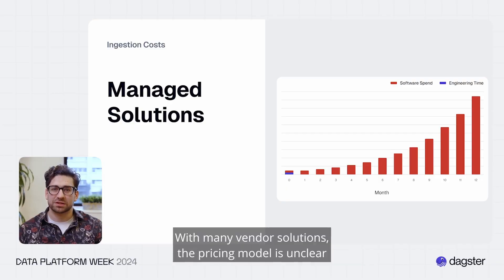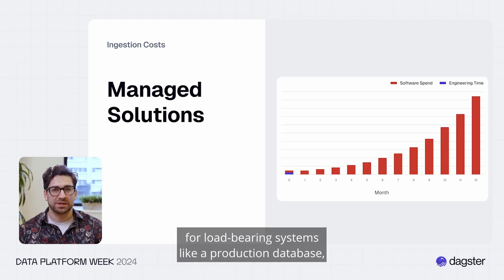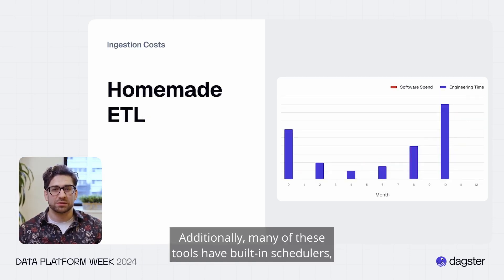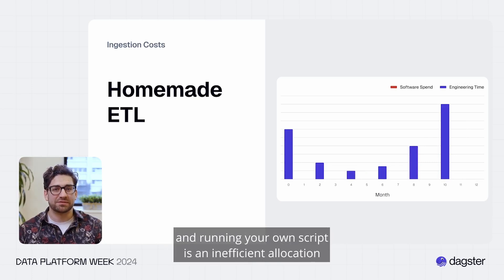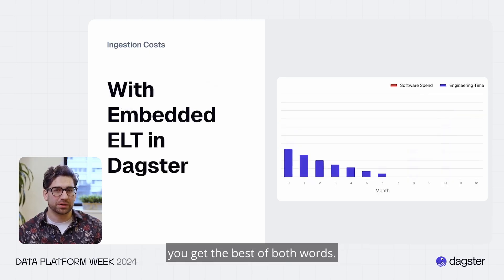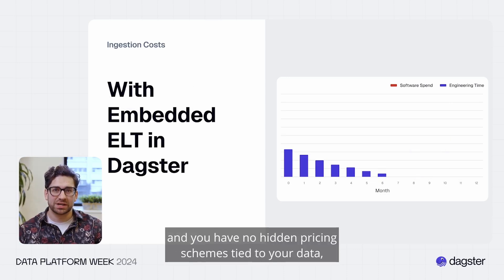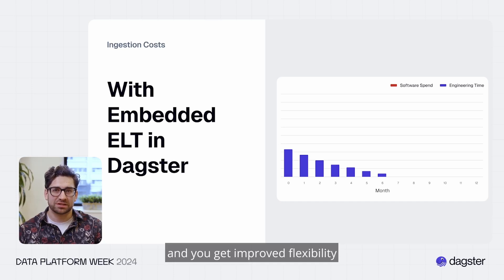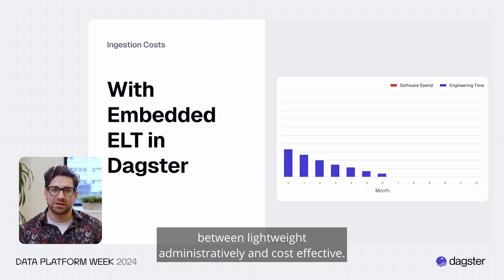With many vendor solutions, the pricing model is unclear and the amount you're paying scales with the magnitude of data you're ingesting, making these solutions a non-starter for load-bearing systems like a production database. Additionally, many of these tools have built-in schedulers — something you already have through Dagster. By leveraging the Embedded ELT package, you get the best of both worlds: you save engineering hours by not reinventing ingestion and replication jobs, have no hidden pricing schemes tied to your data, and get improved flexibility using code-first open-source solutions.